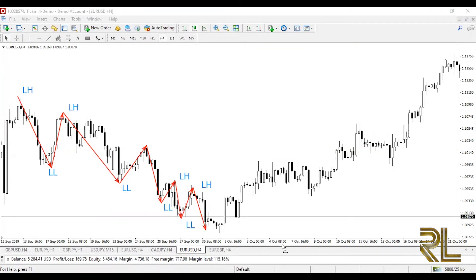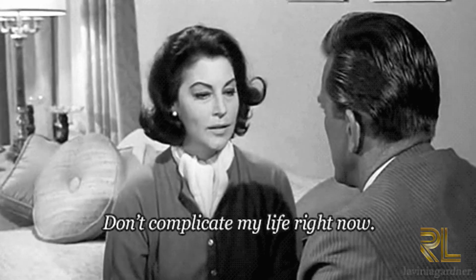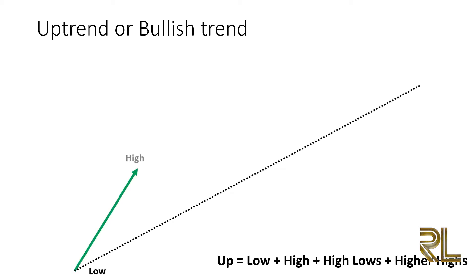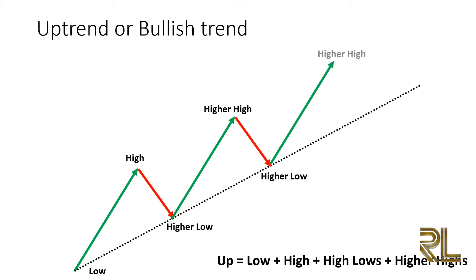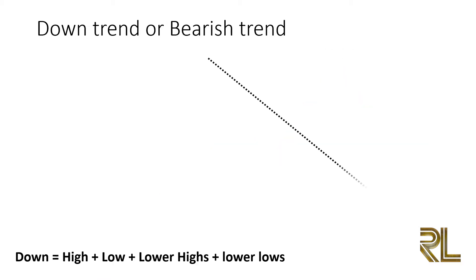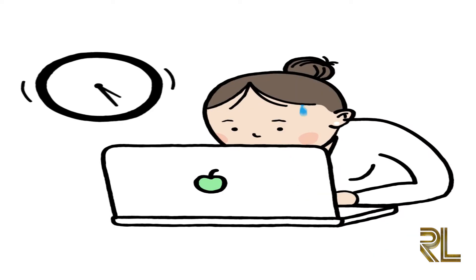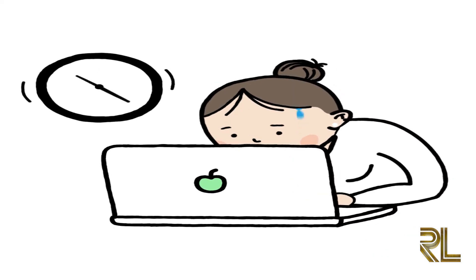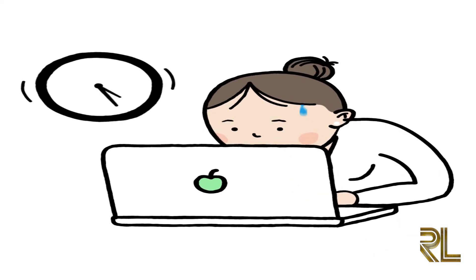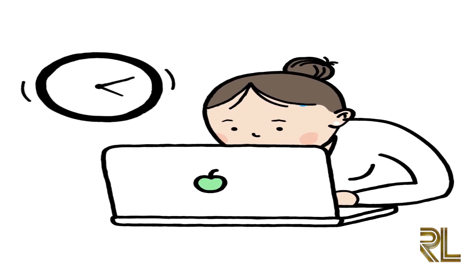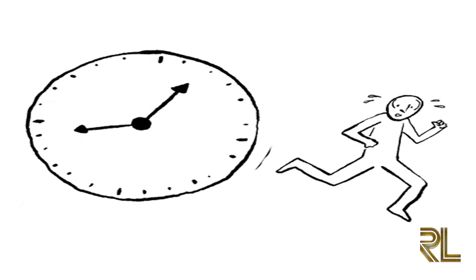Trending markets are easy to identify. Don't try to complicate your analysis — use your eyes and see what the market is doing. If it is making a series of higher highs and higher lows, it is simply an uptrend. Conversely, if it is making a series of lower highs and lower lows, it is obviously a downtrend. To determine whether a market is trending or not, you have to use a big time frame such as the four-hour, daily, or weekly. Never try to use smaller time frames to determine the market structure.